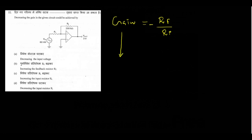To decrease the gain, we can decrease the Rf value — that is the feedback resistor — or we can increase the Ri value, the input resistor. If we do either of these actions, our gain decreases. As per the given options, increasing the input resistance Ri — option C — is the right answer.